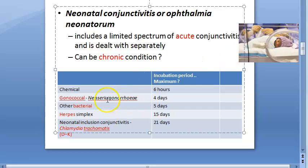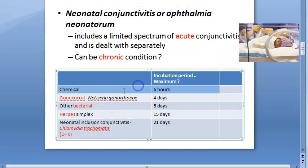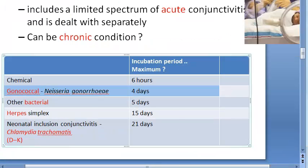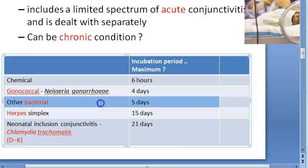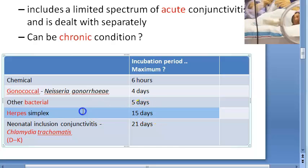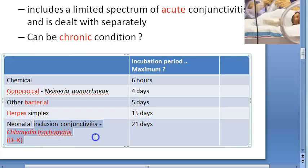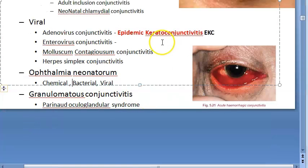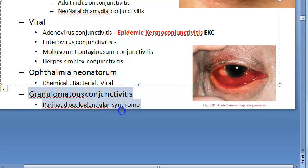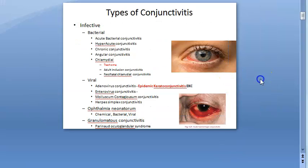For ophthalmia neonatorum: if the onset is within six hours, the cause is chemical; within four days it is gonococcal; around five days it could be herpes simplex. Neonatal inclusion conjunctivitis is bacterial. Granulomatous conjunctivitis includes Parinaud oculoglandular syndrome from various infective causes.